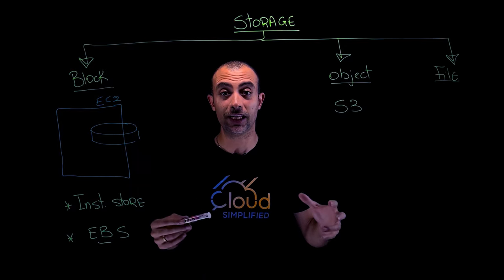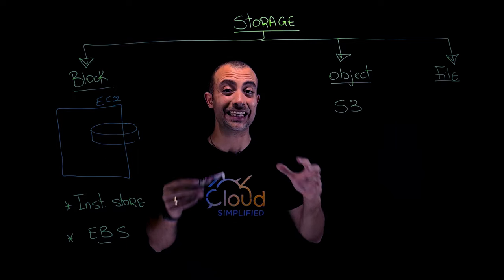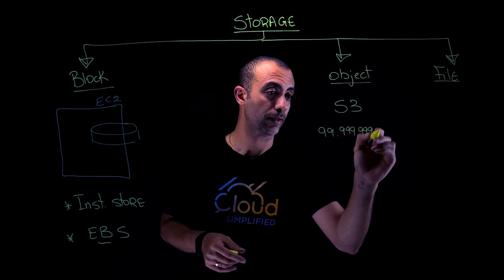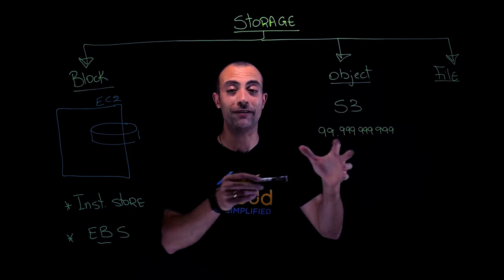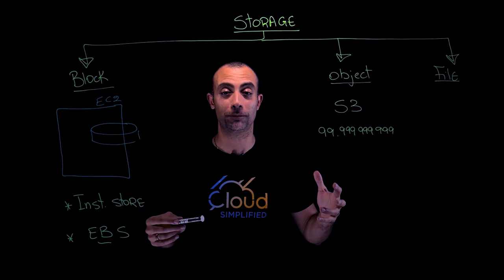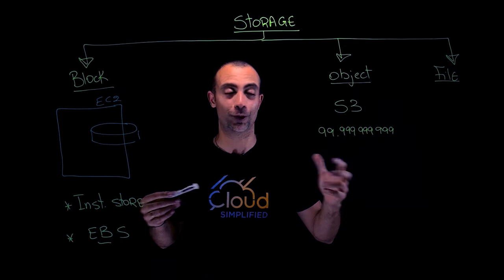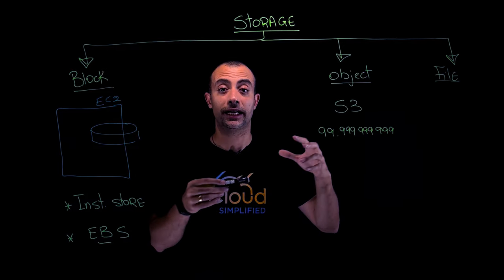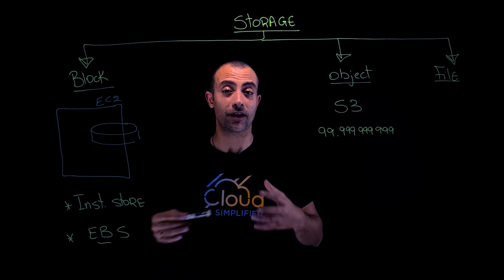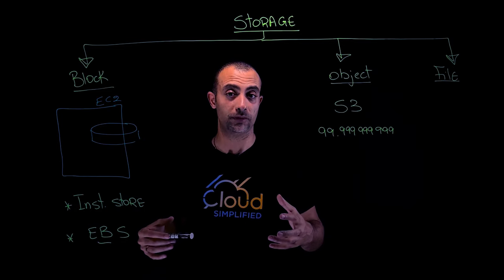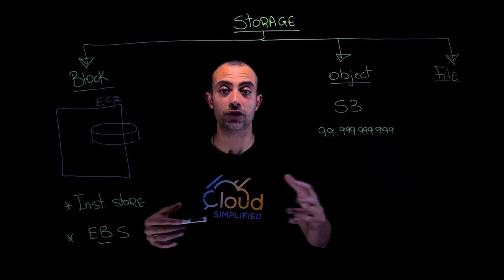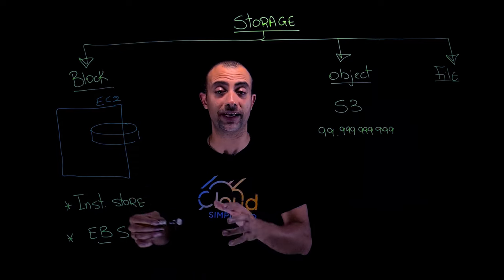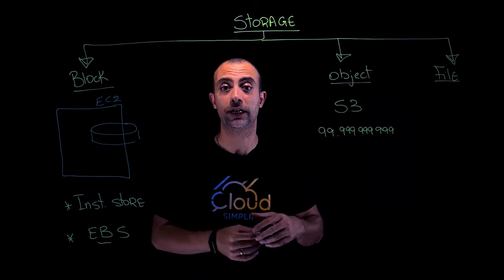S3 has something very unique — its durability. S3 has 11 nines of durability, meaning theoretically you might lose an object once every 10 million years. S3 is also designed for archival using S3 Glacier or S3 Glacier Deep Archive, where you keep a copy of data for compliance reasons in case you need to retrieve it many years later. This makes S3 a very cost-effective archival service.